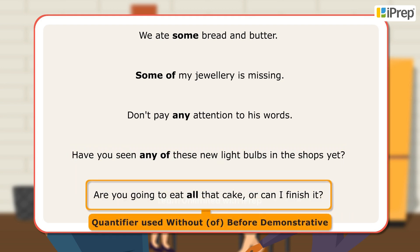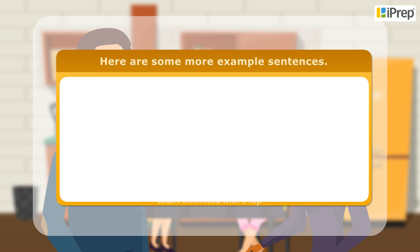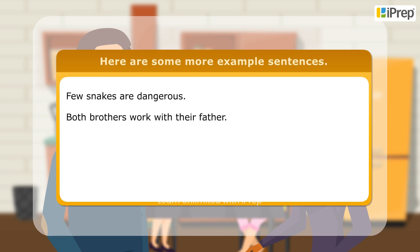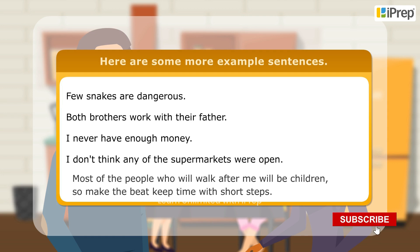'Are you going to eat all that cake, or can I finish it?' — quantifier used without 'of' before a demonstrative. Here are some more example sentences: few snakes are dangerous; both brothers work with their father; I never have enough money; I don't think any of the supermarkets were open.